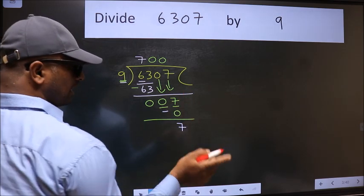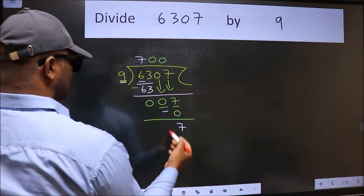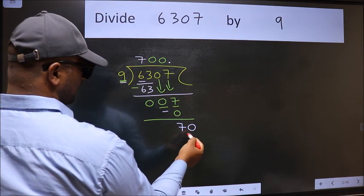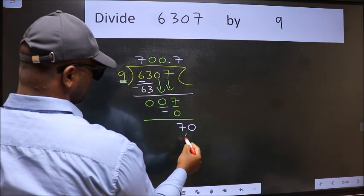And 7 is smaller than 9, so now we can put dot and take 0. So 70 - a number close to 70 in 9 table is 9 times 7, which is 63.